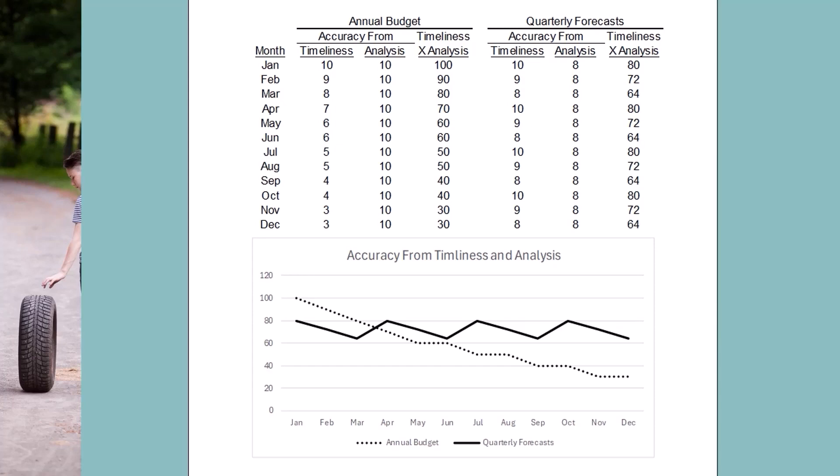Timeliness accuracy for budgets then drops by 1 every other month. Timeliness accuracy for forecasts starts at 10, drops by 1 each month, and then goes back to 10 with each new reforecast. The graph shows how budgets are briefly more accurate than forecasts, but decreases in timeliness soon offset the benefits of initial analytical accuracy.